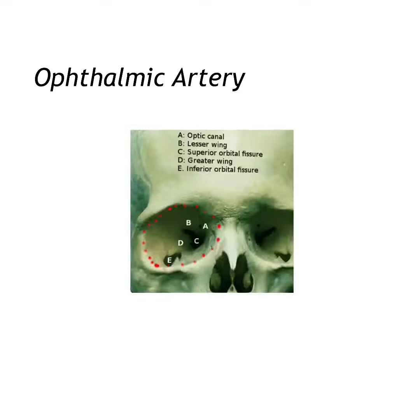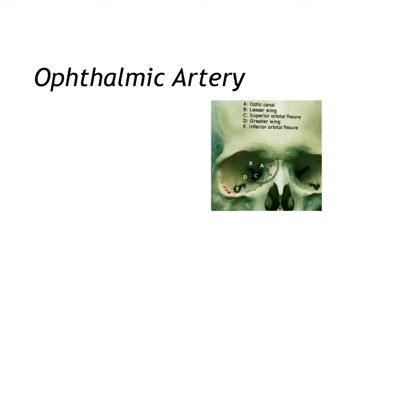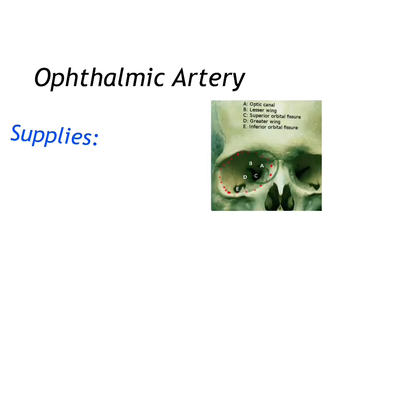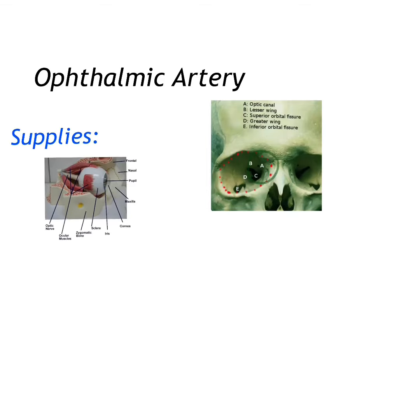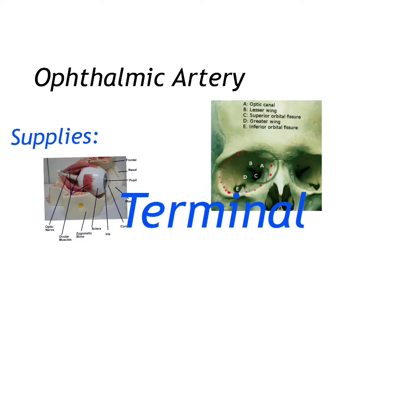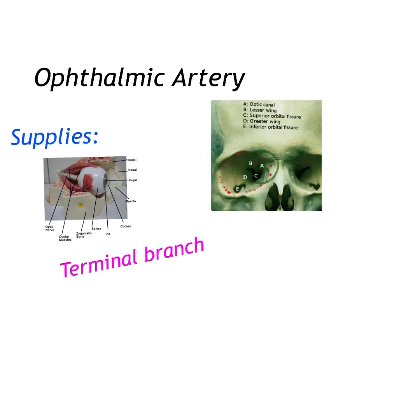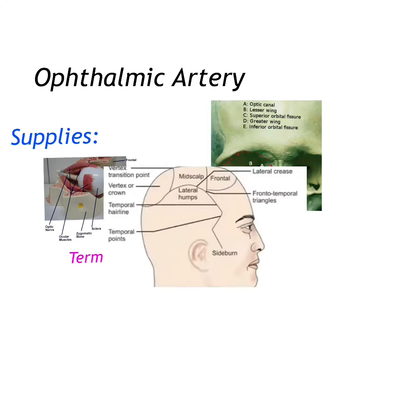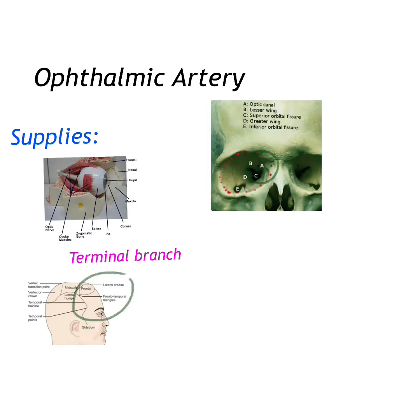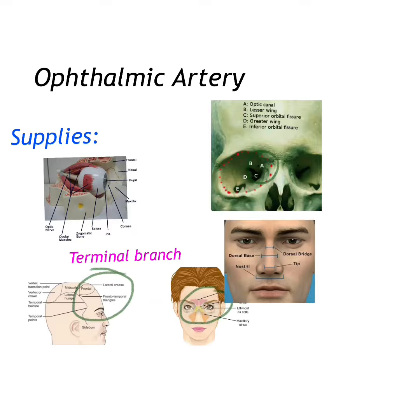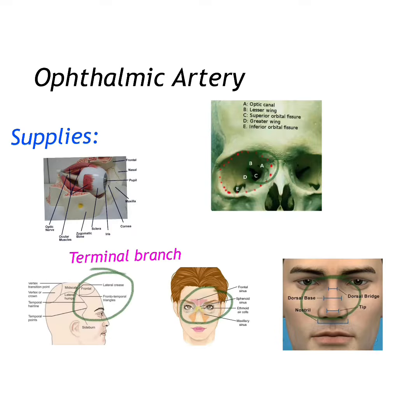The first branch is the ophthalmic artery. The ophthalmic artery opens at the optic canal and it supplies the eyes and other orbital structures. The terminal branches of the ophthalmic artery supply the frontal area of the scalp, the ethmoidal and frontal sinuses, and the dorsum of the nose.